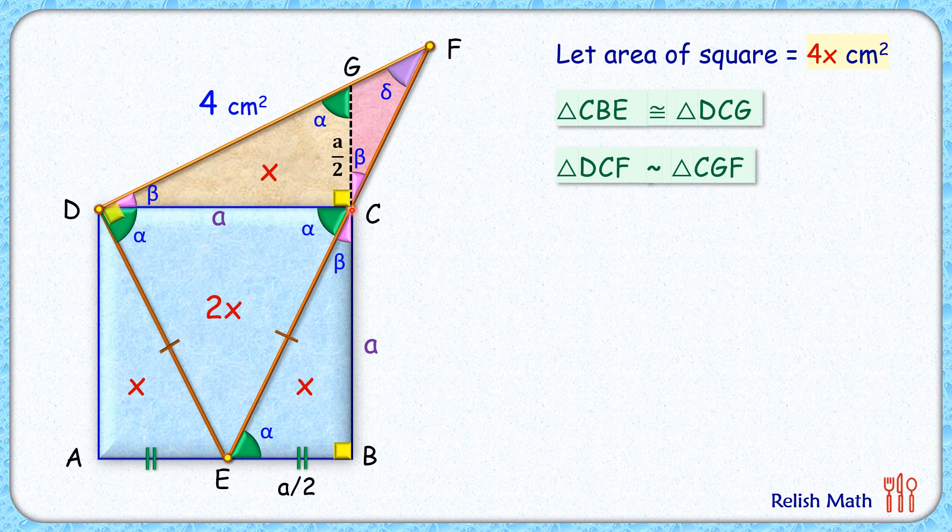As the triangles are similar, the ratio of their areas will be the square of the ratio of their sides. Area DCF is already given in the question as 4 centimeter square.